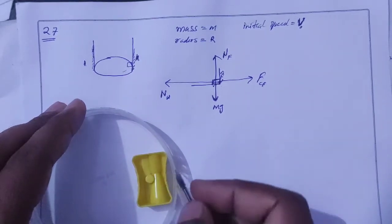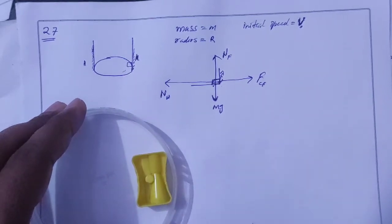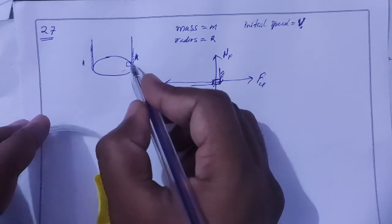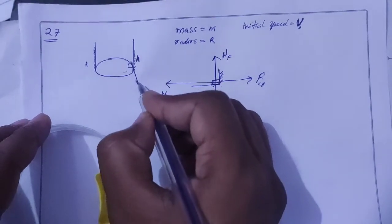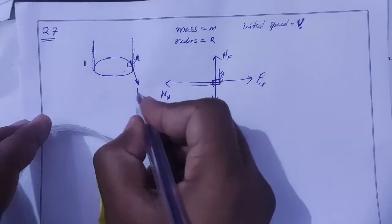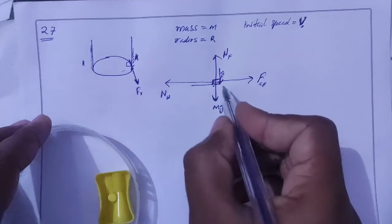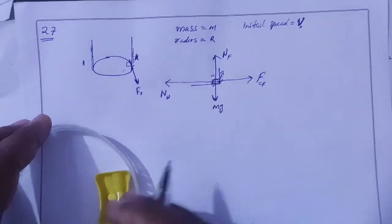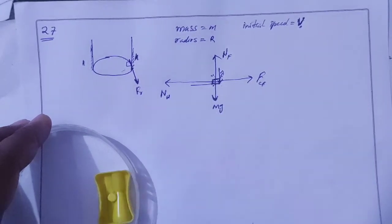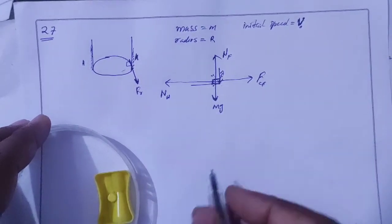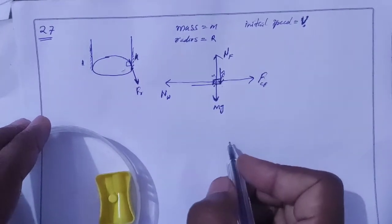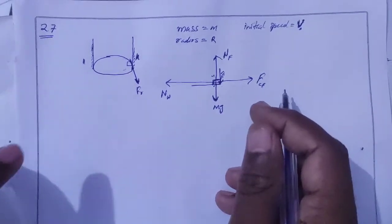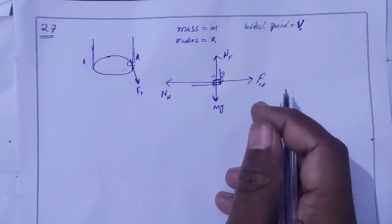The wall acts tangentially. Friction acts tangentially and perpendicular to the motion. The friction force opposes the motion of the block.